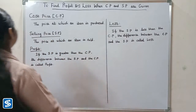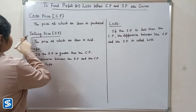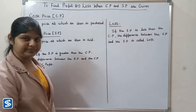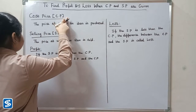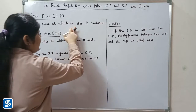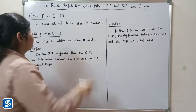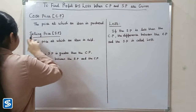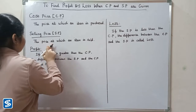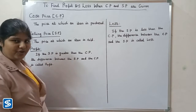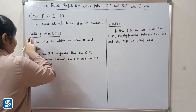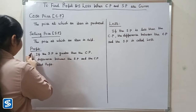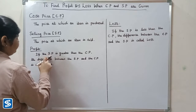Cost price means the price at which an item is purchased. The short form of cost price is CP. Selling price means the price at which an item is sold. The short form of selling price is SP.